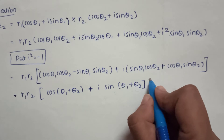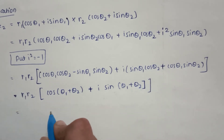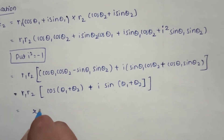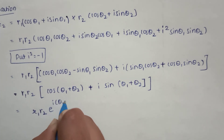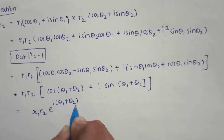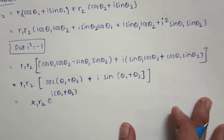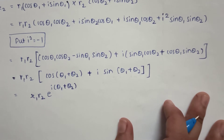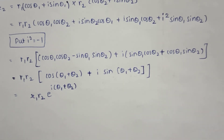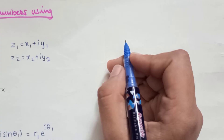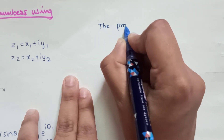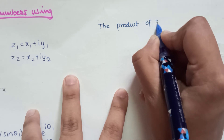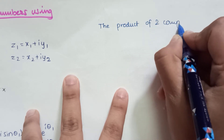This equals R1R2·e^(i(θ1+θ2)), where we use Euler's formula. This shows that the multiplication of two complex numbers is also a complex number. Thus, the product of two complex numbers is a complex number.